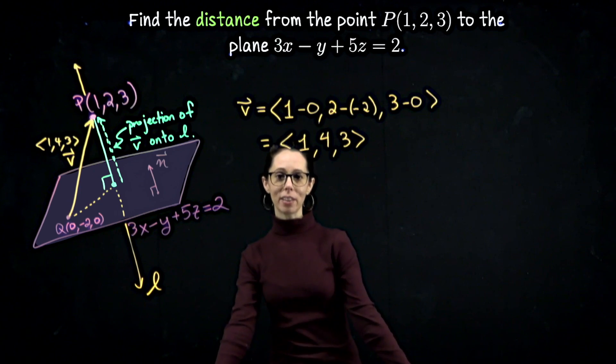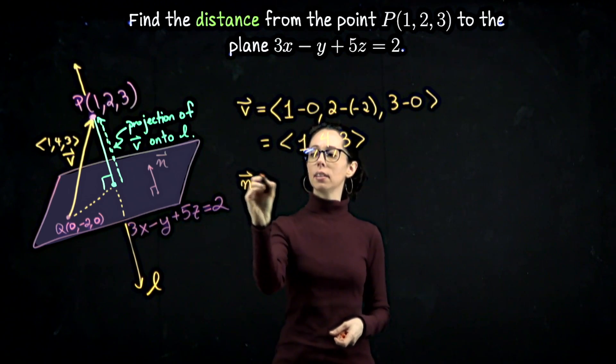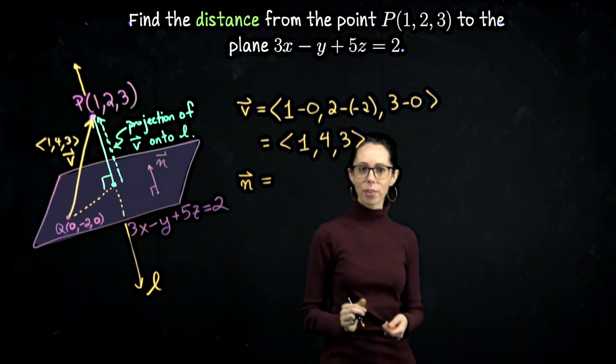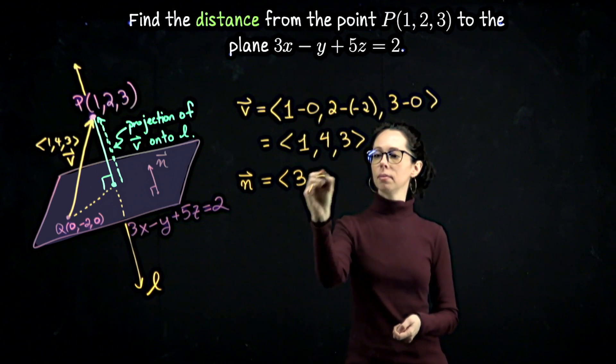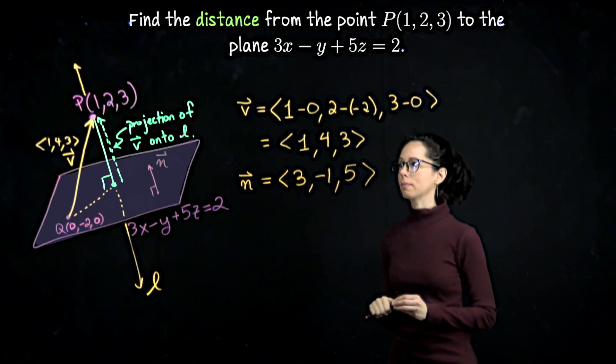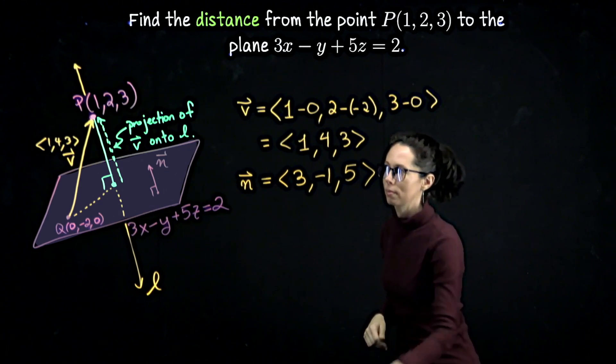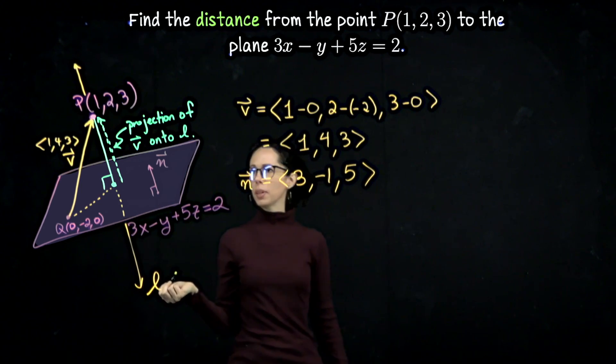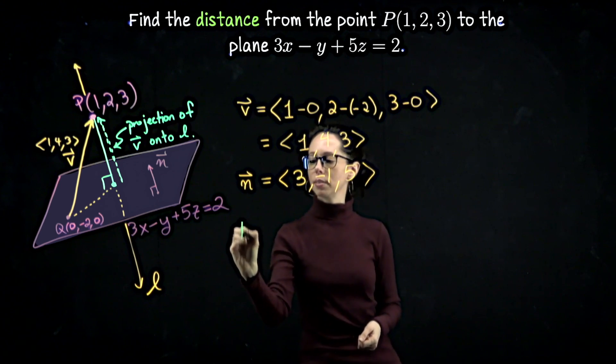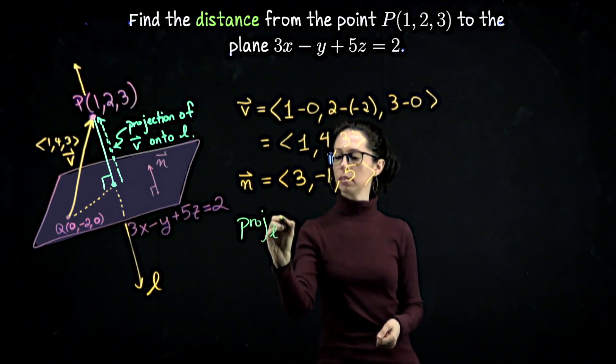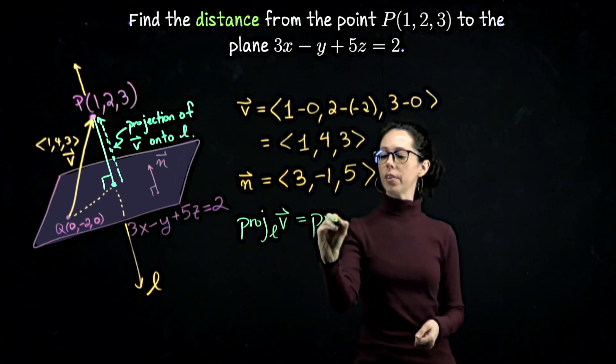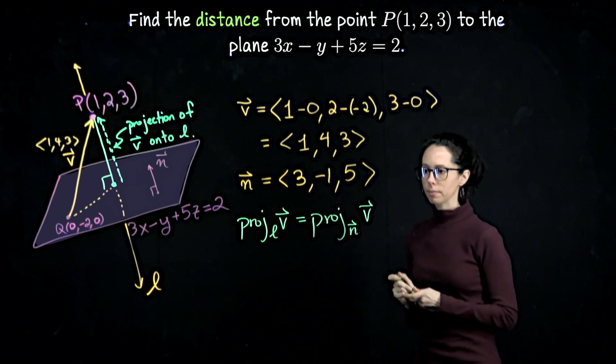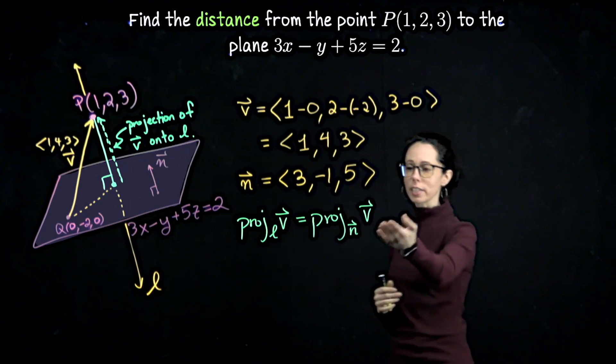We have such a vector. In fact, we get it immediately from the problem. So the vector n, a vector known to be perpendicular to our plane, is the vector <3, -1, 5>. It comes right from the equation of the plane. Okay, so this projection of v onto L is the same thing as the projection of v onto n. Let me call this the vector projection. So just to reiterate what I've been saying. Projecting v onto the line is the same thing as projecting v onto this orthogonal vector.